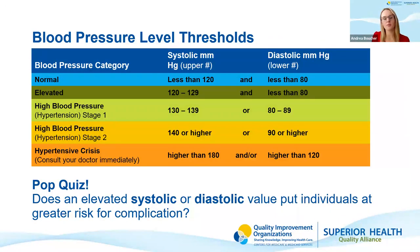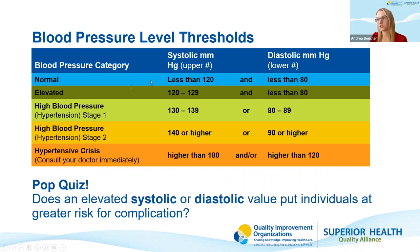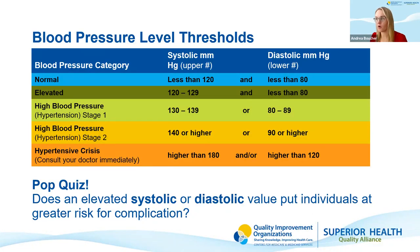This slide covers blood pressure level thresholds from the most recent recommendations of the American Heart Association and the American College of Cardiology. Normal blood pressure is a systolic of less than 120 and a diastolic of less than 80. Elevated is systolic between 120 to 129 and diastolic of less than 80. Stage one hypertension is systolic between 130 to 139 or diastolic between 80 to 89. Stage two hypertension is systolic of 140 or higher or diastolic of 90 or higher. Hypertensive crisis is a systolic higher than 180 and/or diastolic higher than 120.